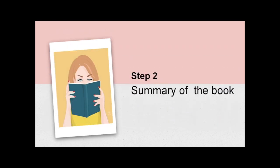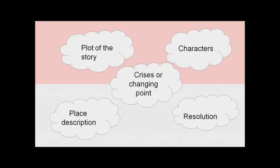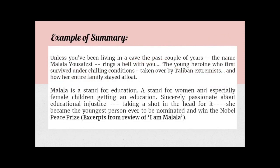After introducing the book, let's move on to the summary, which involves the plot of the story, the characteristics, the crisis or changing point in the book, the place description, and the resolution. Here is an example of a summary written by a reviewer that includes the plot of the story, crisis, resolution, and the character on which the book is based.